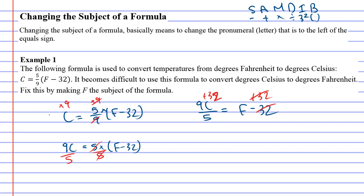That cancels out the 32, which leaves us with just F, which is good. So what do we do with this? Well, you just write it as it's written here. You just go 9C over 5 plus 32.